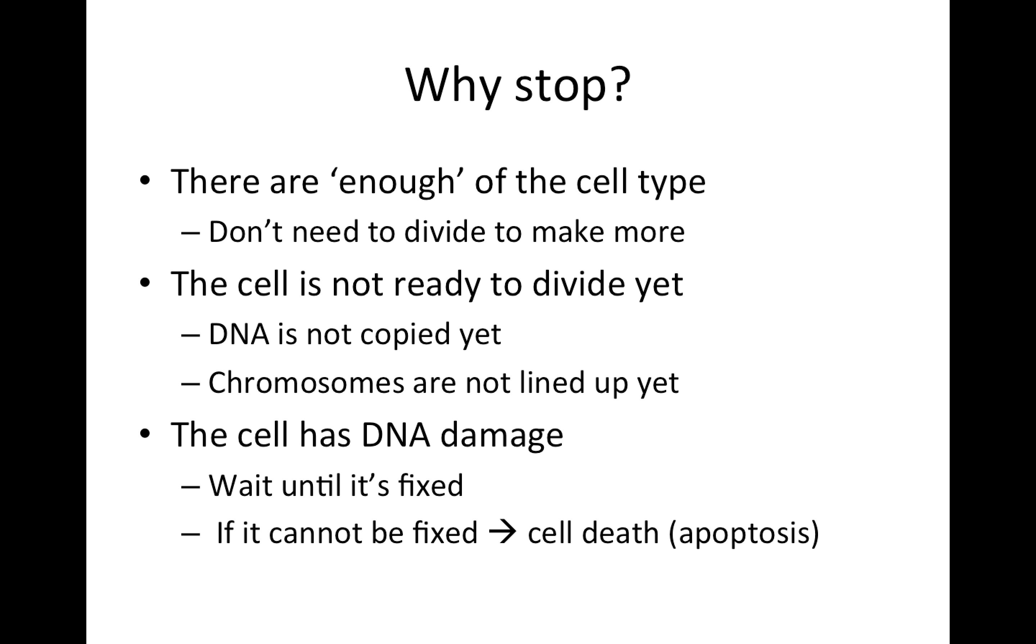So one question would be, so why do cells want to stop? So one possibility is there's enough of the cell type. So in an adult skin cell, or certain cells in adults, there's no more need for additional cells of that type. So we don't need to divide to make more.